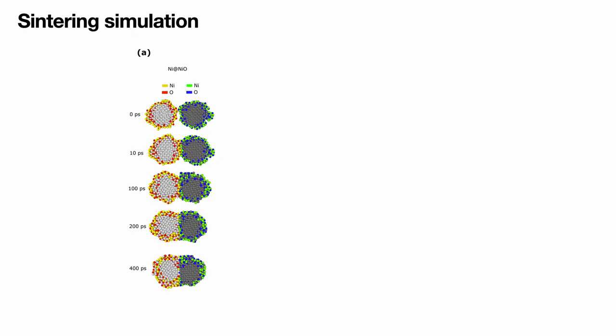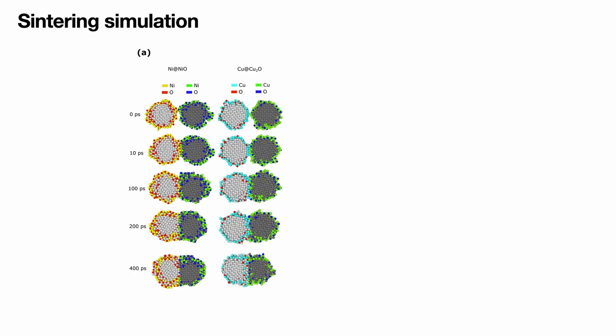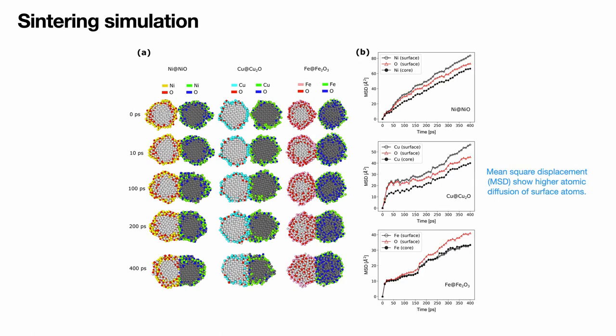Here it shows how two nickel oxide core-shell nanoparticles coalesce over a period of time, and similarly for the other two types of nanoparticles. A common feature observed in all three types is that the core atoms do not diffuse across the boundary zone between the two clusters, and the surface atoms do not diffuse onto the other side of the nanoparticle surface either.